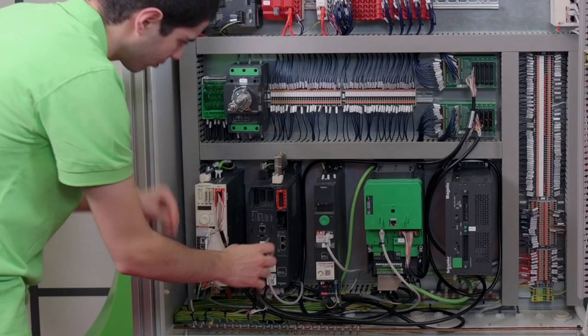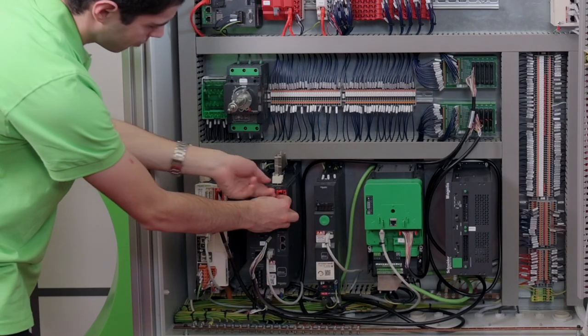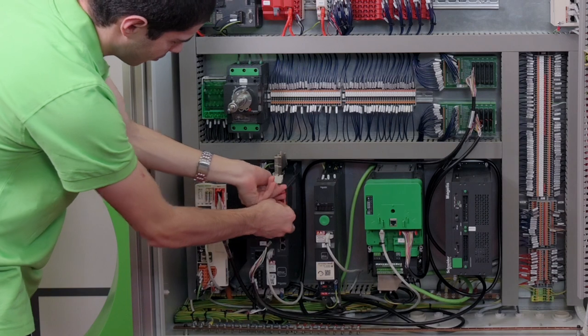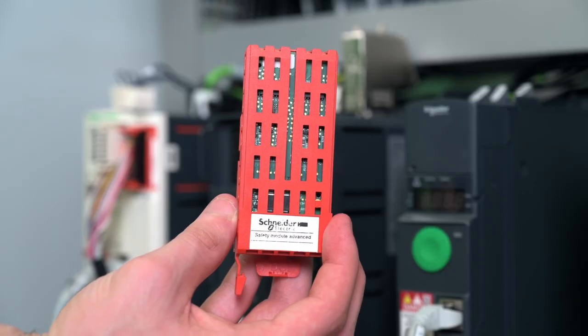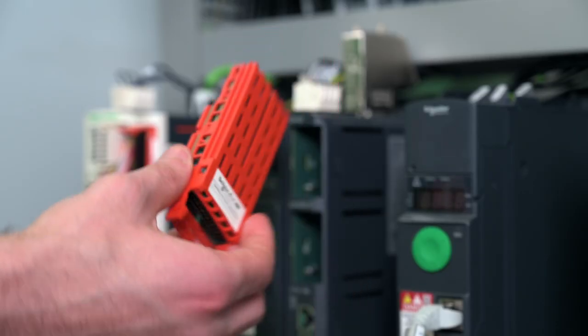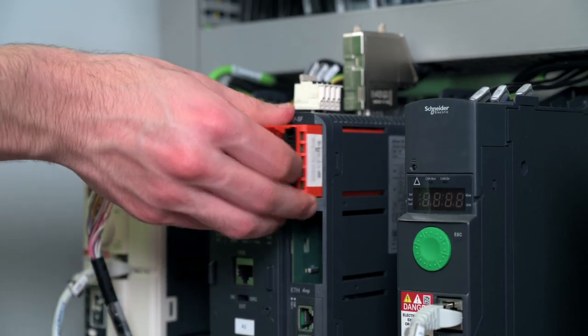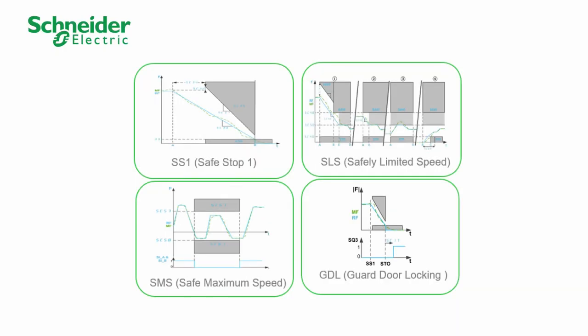In this offer we have enabled a safety module for our best-in-class offer, ATV Machine 340. With the safety module we can activate different safety functions like SS1 (Safe Stop 1), SLS (Safely Limited Speed), and SMS (Safe Maximum Speed).